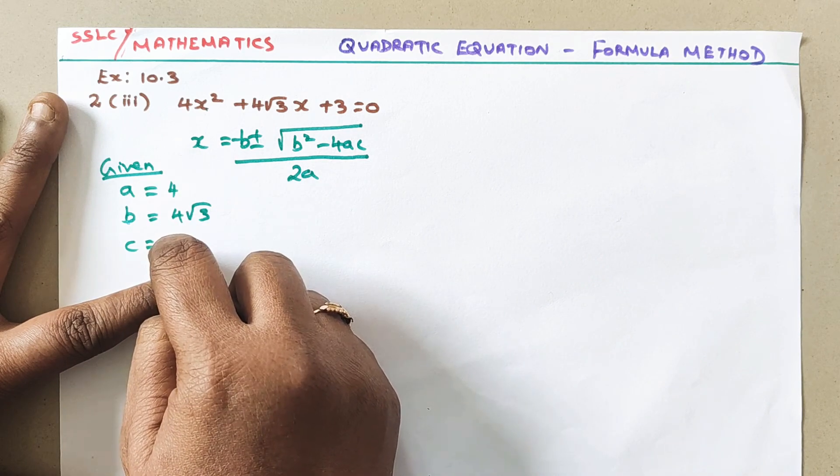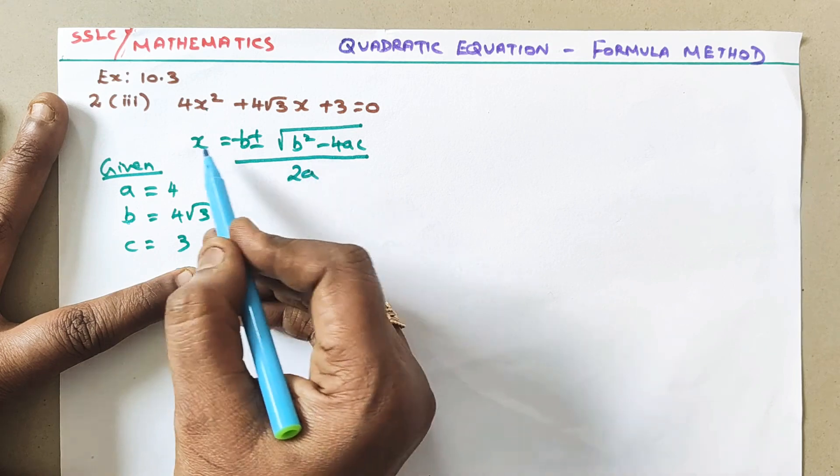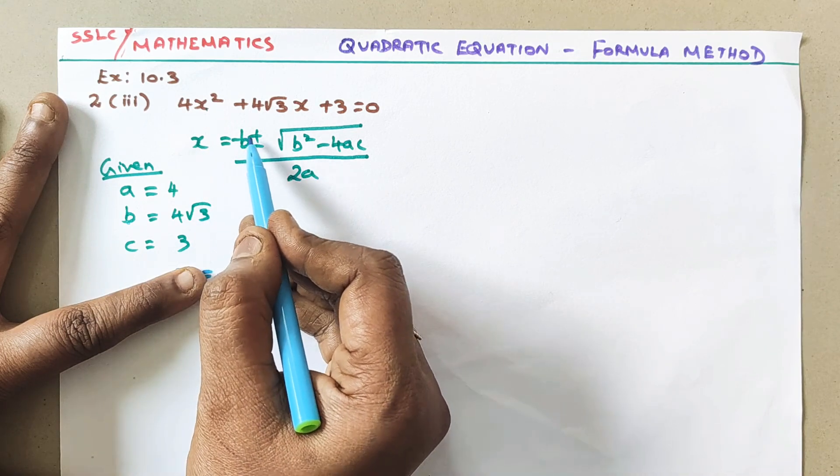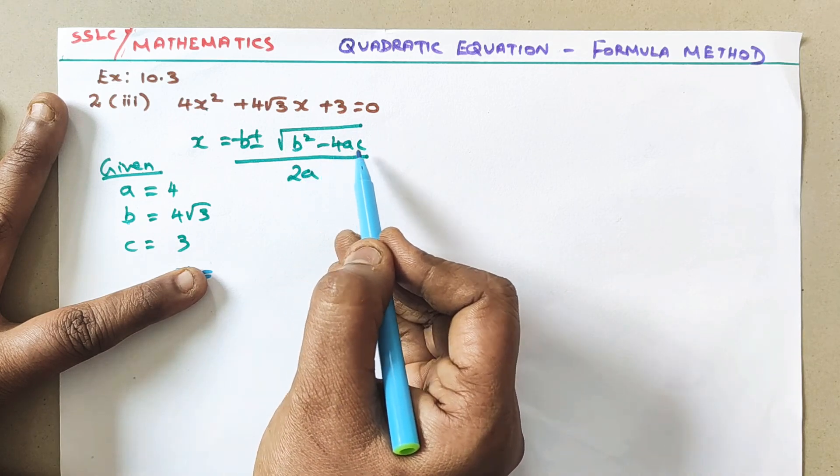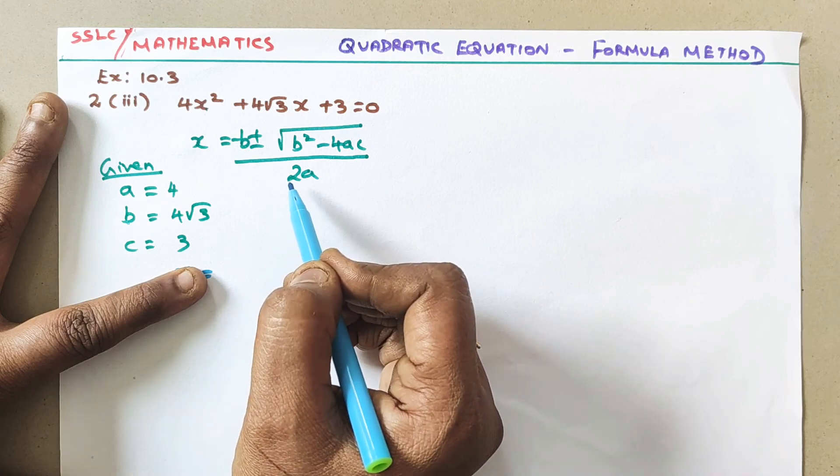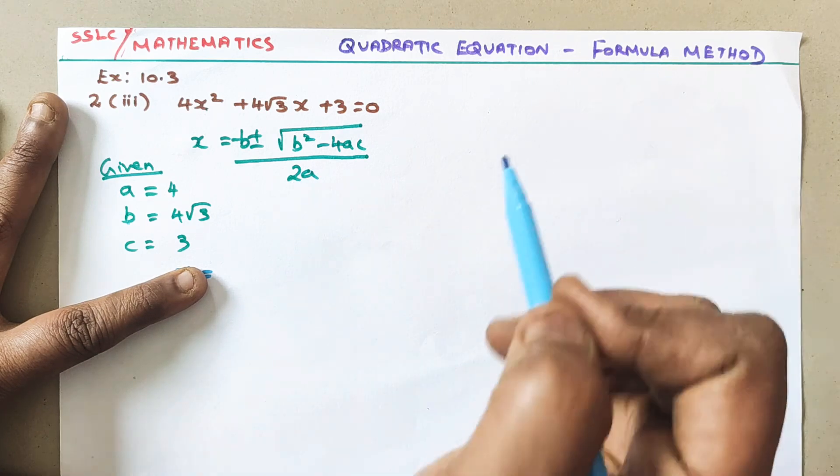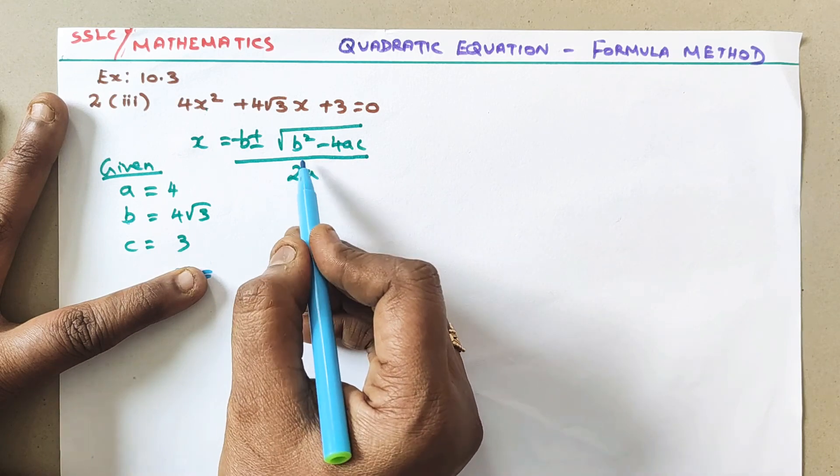So just write the given. Now we are going to substitute in the formula. What is the formula? x = [-b ± √(b² - 4ac)] / 2a. This is the formula to find the value of x by formula method. Now let me substitute a, b, c value in this formula.